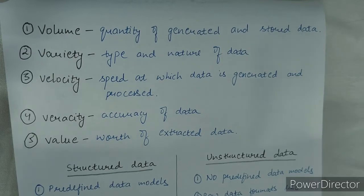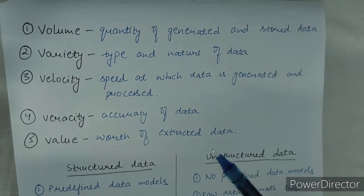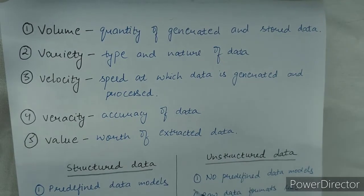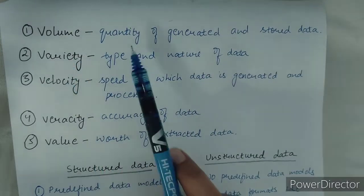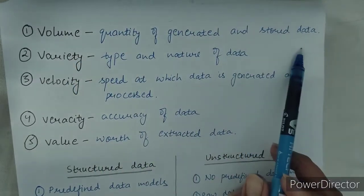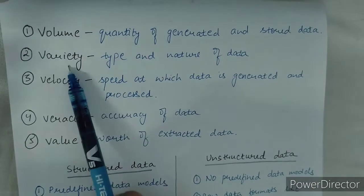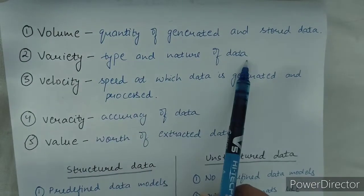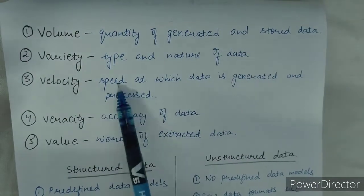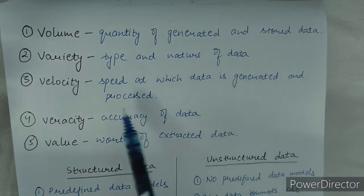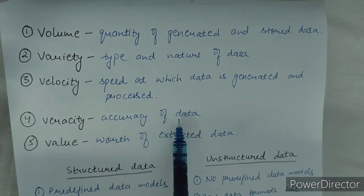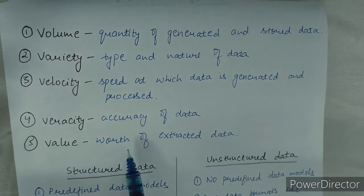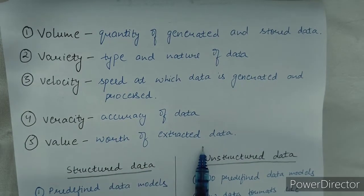Whatever I have explained, I have also written so that you have notes. Volume means quantity of generated and stored data. Variety means type and nature of data. Velocity means speed at which data is generated and processed. Veracity means accuracy of data. And value means worth of the extracted data. I hope the five V's are clear.